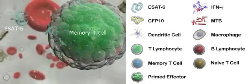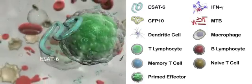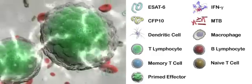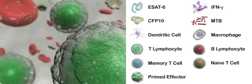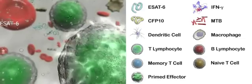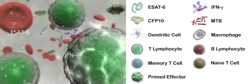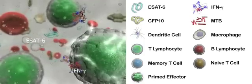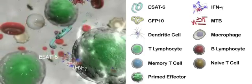Resting primed memory cells will usually take 24 to 48 hours to activate in the presence of MTB proteins. The T-Spot TB assay only detects interferon gamma released from MTB-specific active primed effector cells, since PBMC white cells are only incubated with antigen for 16 hours.